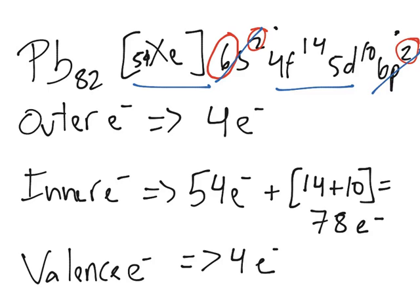And a good way to see if you did it right is that when you add up 4 and 78, so outer and inner, you will get 82. So outer plus inner is usually the atomic number of the element. But be careful with the ions because they can be a little tricky.